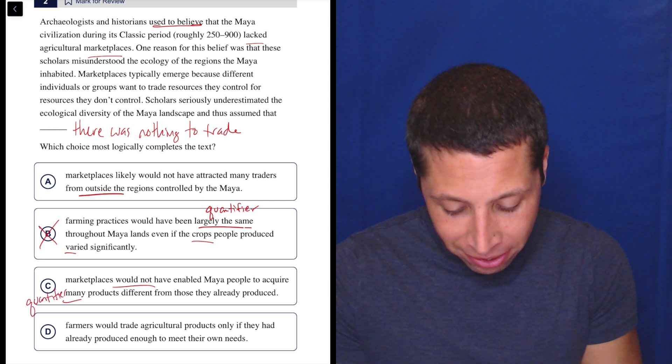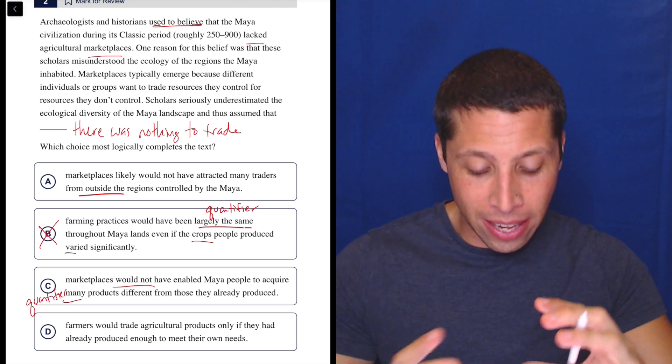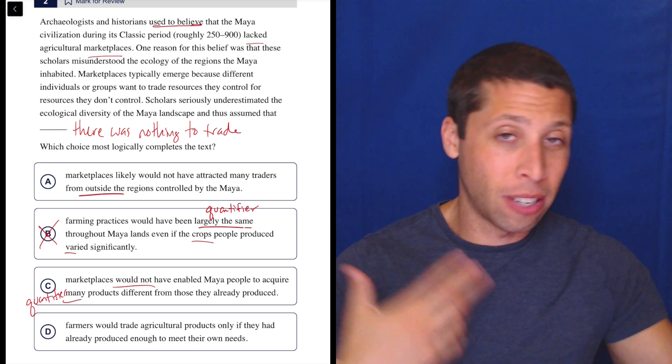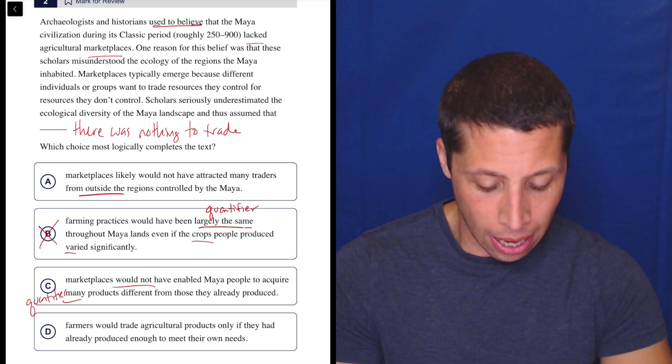But that's the whole point. The passage in this case is about quantifiers because we're saying that they either have a lot of stuff or they don't, and that determines whether or not there's a marketplace. So, so far, this is pretty good. I might be misreading it, so I'm a little nervous, but let's look at D.